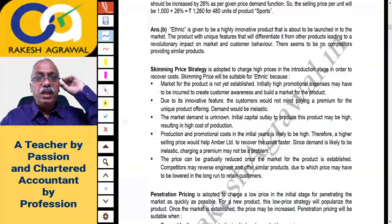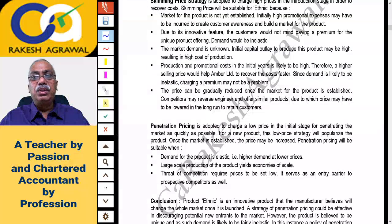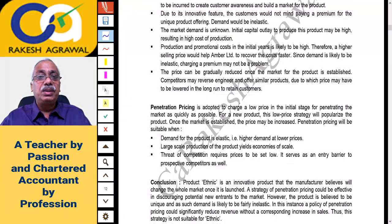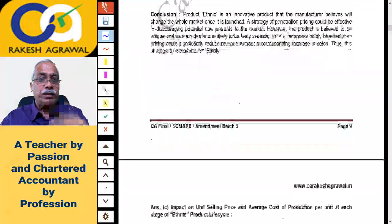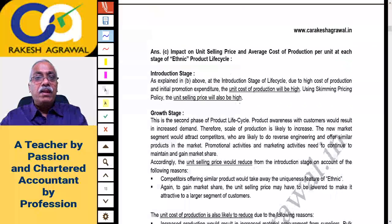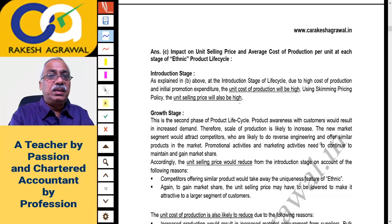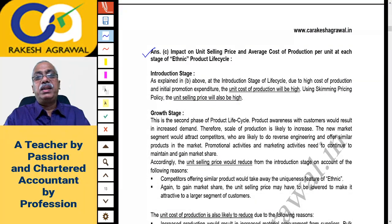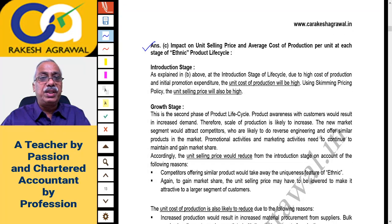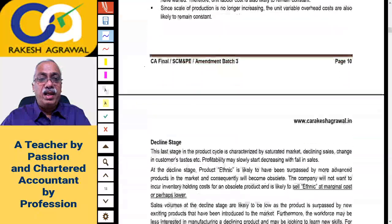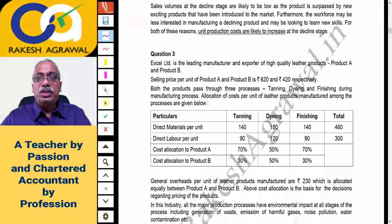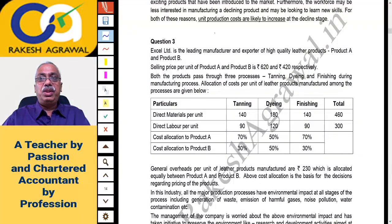You have to be very careful in writing the answer and should know the theory well. As discussed in regular batches, you should be good at theory conceptually so you can write in your own words. The answer to part C — impact on unit selling price and average production cost at introduction, growth, maturity, and decline stages — is printed in the notes.